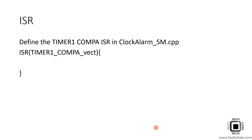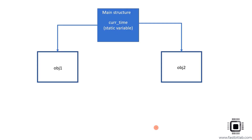We have defined our ISR and from the ISR, we have to increment that current_time variable. But there is one problem: since current_time has been selected as a non-static variable, whenever you create an object of the main structure, every time one copy of the current_time variable will be there. Currently we made current_time a private attribute of the object, but that is not actually a good idea.